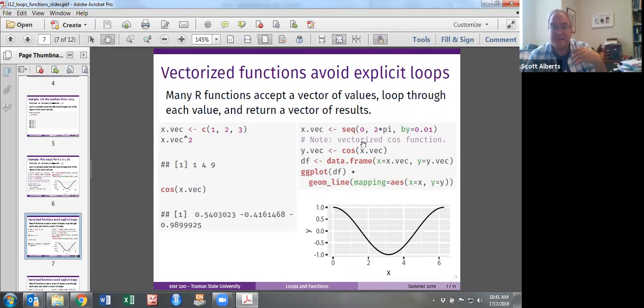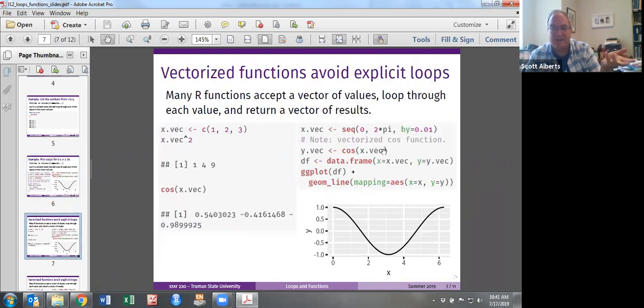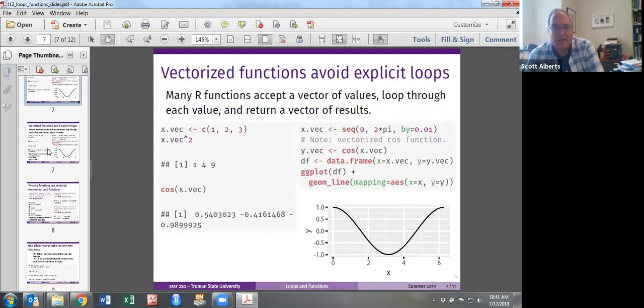We can take it to the extreme and say, go from 0 to 2 pi, so 6.28, so that means there are 628 numbers. Instead of doing that code like we did with the for loop, we just run the cosine command on the vector. What that means is that piecewise it does the cosine to each element in our data. Then we can still make our data frame and plot it and you can see we get the same graph both times.